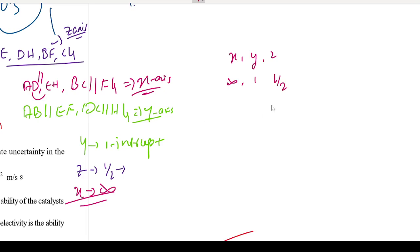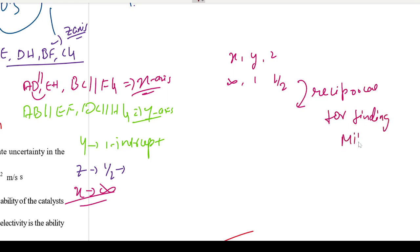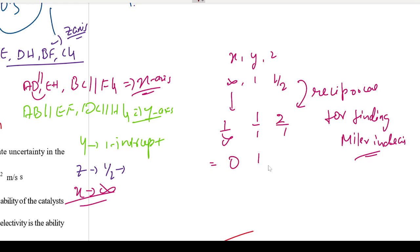To find the Miller indices, we take the reciprocals. The reciprocal of infinity is 0, the reciprocal of 1 is 1, and the reciprocal of ½ is 2. So our Miller indices come out to be (0, 1, 2).